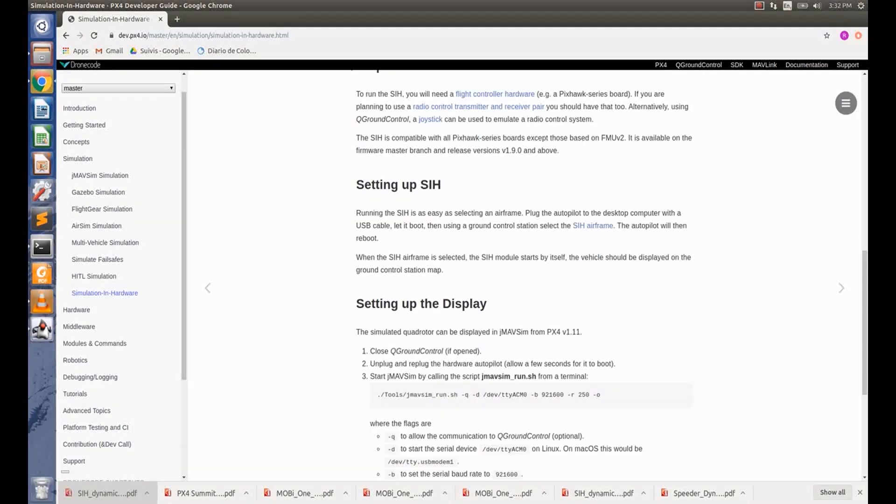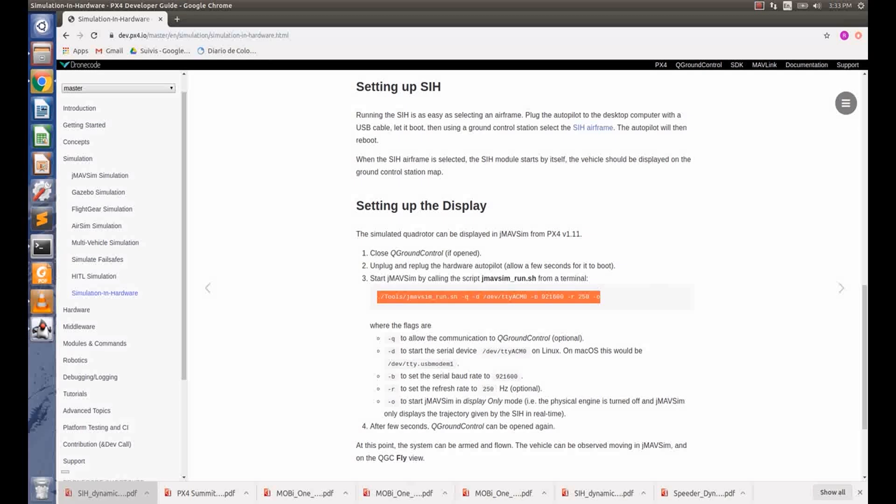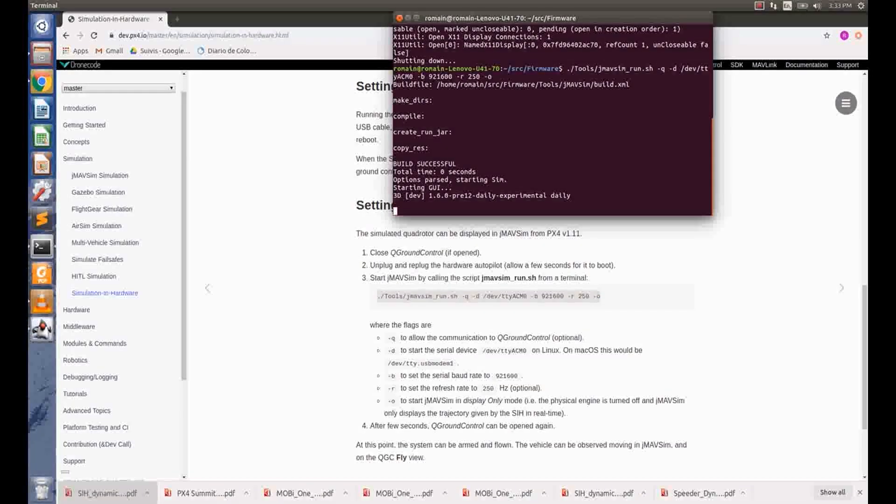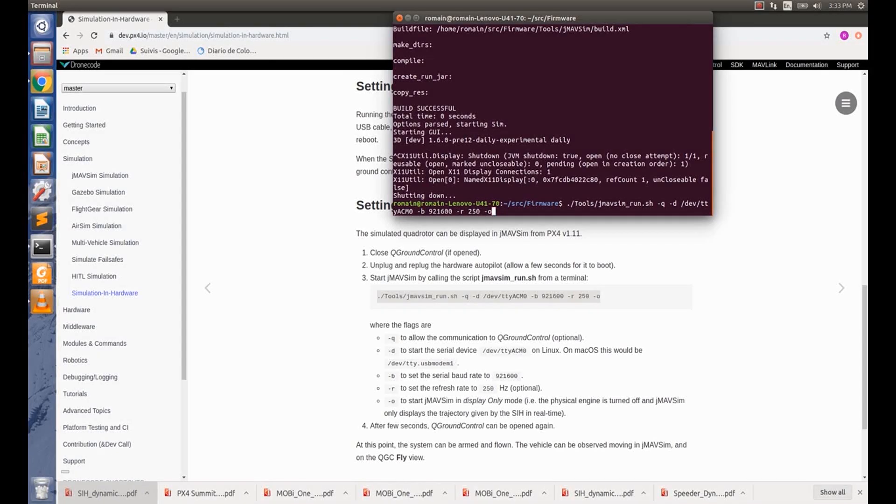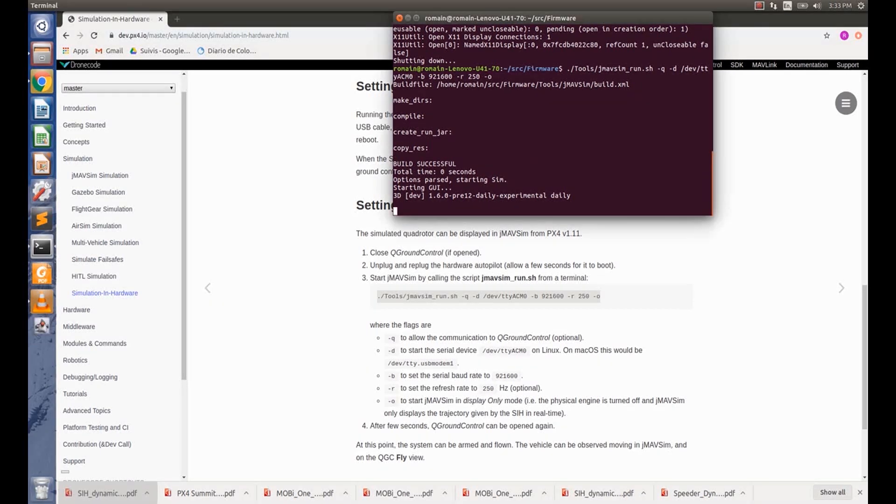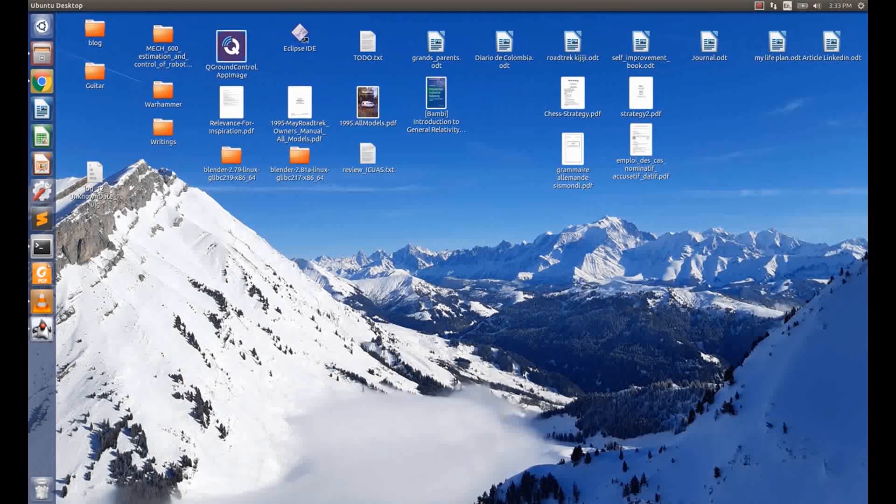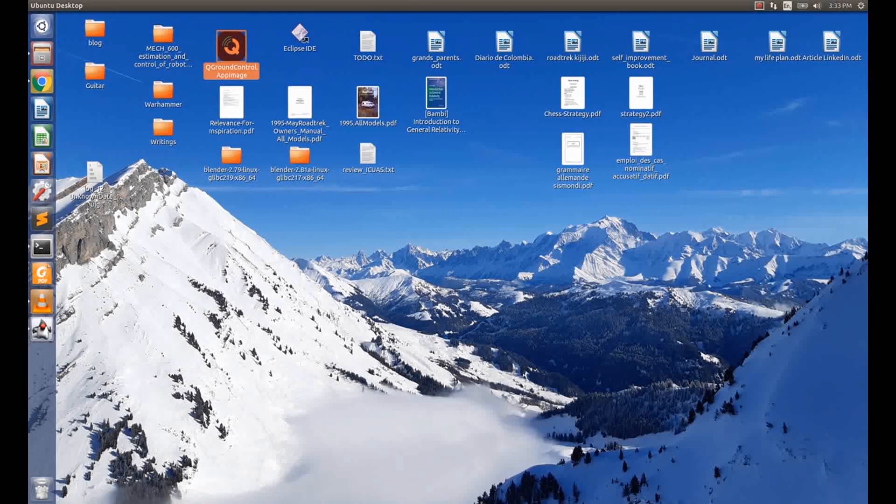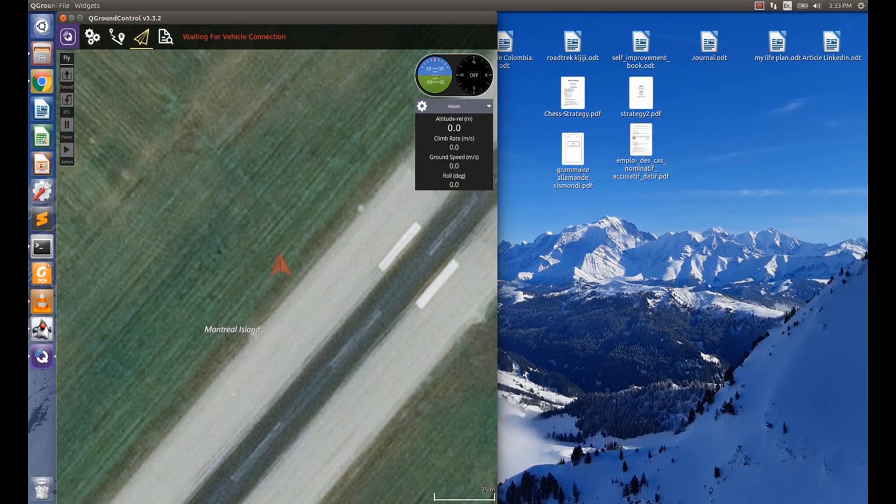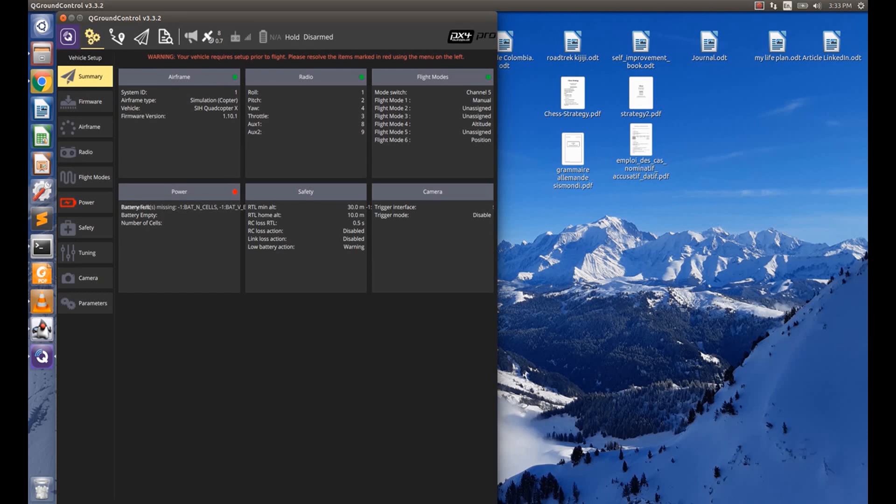And here is the information to set up the display using jmafsim. Close QGroundControl, this is done already. Unplug and re-plug the hardware autopilot, then copy-paste this command in the terminal to start jmafsim. And jmafsim is open. Then we can open QGroundControl, which should auto-connect to jmafsim.